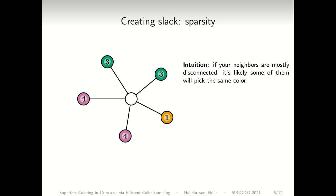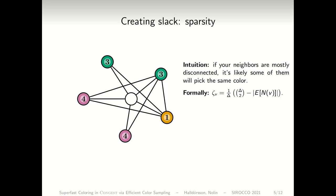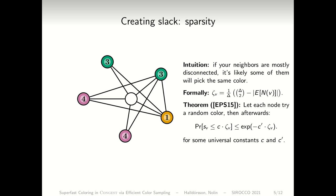This also works if, instead of something fully disconnected, you have a good fraction of edges missing. More formally, if you define the sparsity of a node as the number of missing edges in its neighbourhood divided by delta, then what Elkin, Petty, and Su showed is that each node gets slack proportional to its sparsity, with a probability that is 1 minus some exponential involving the sparsity of the node.